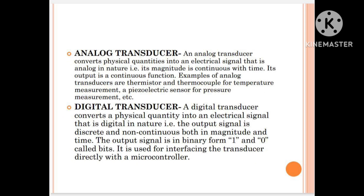Then we have analog and digital transducers. An analog transducer converts a physical quantity into an electrical signal that is analog in nature — that is, its magnitude is a continuous function of time. Its output is a continuous function. Examples of analog transducers are thermistors, thermocouples for temperature measurement, and piezoelectric sensors for pressure measurement, etc.